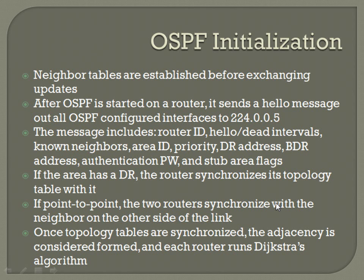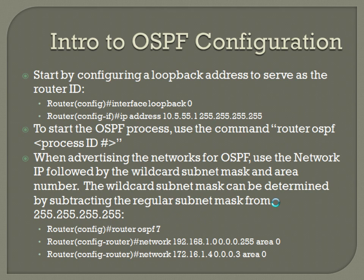Configuring OSPF is pretty straightforward, especially if you remember the syntax from RIP — it's very, very similar. Start by configuring a loopback address to serve as the router ID. You always want to make sure you've got that because you don't want to leave your router ID up to fate, just like you don't want to leave who the designated router and backup designated router is up to fate. To set a loopback from global configuration mode: interface loopback, then the loopback number — this can be any number from zero through about two million.